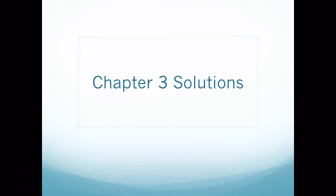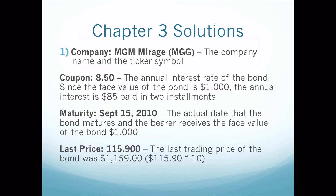All right, we're on the last chapter for the first test. This is the solutions for chapter three. There were three problems. The first problem was 3-1, and what you were to do is actually explain the sections of a bond printout that you'd find in a Wall Street Journal. The first thing was the company.